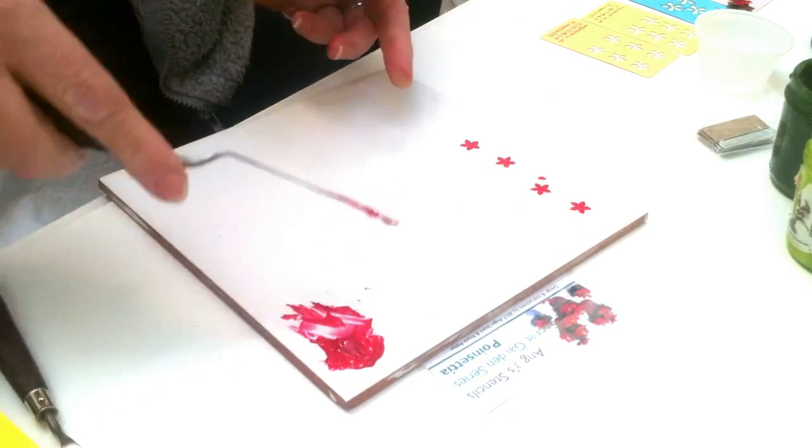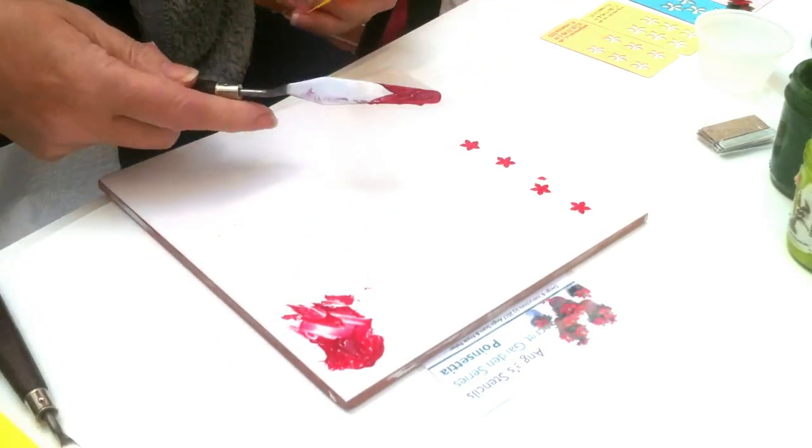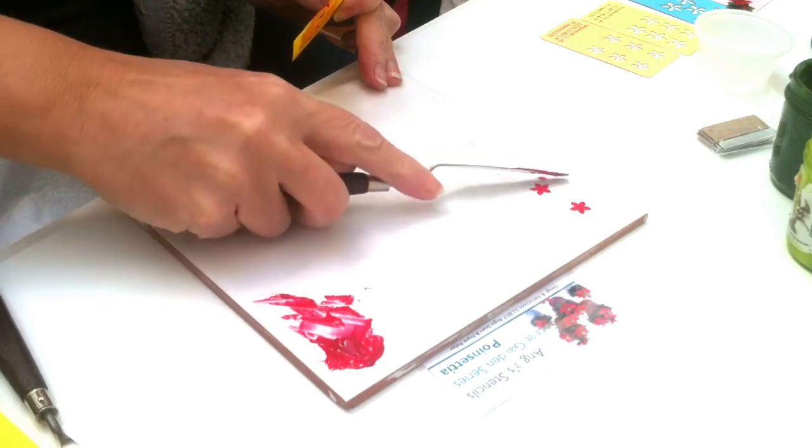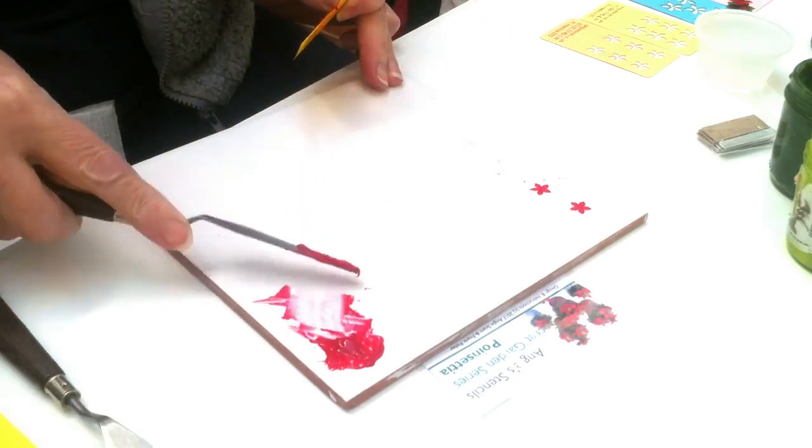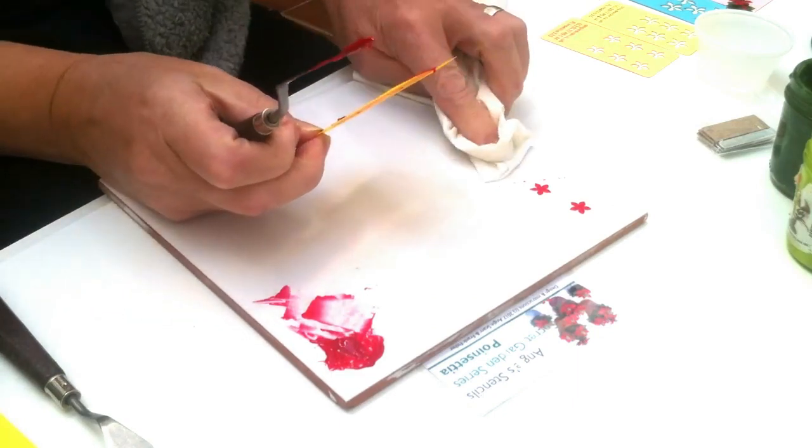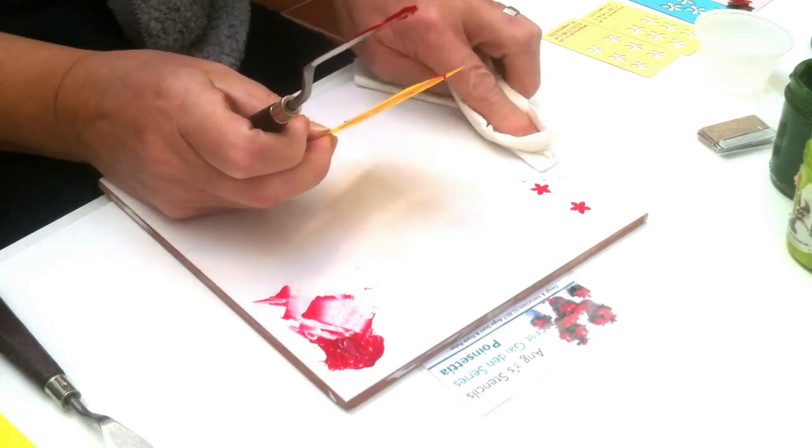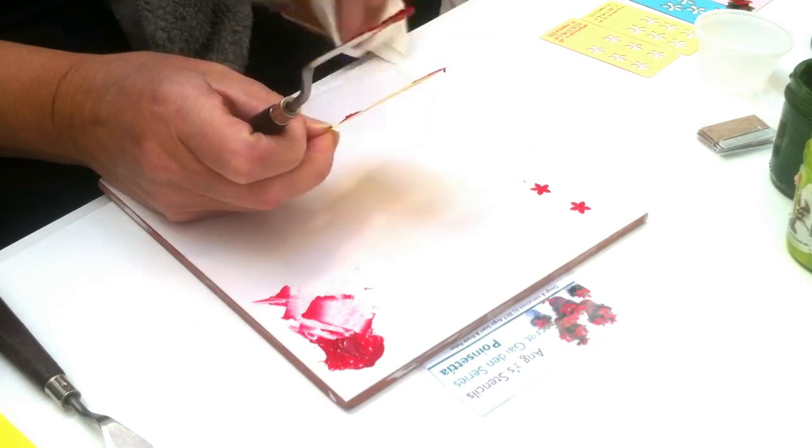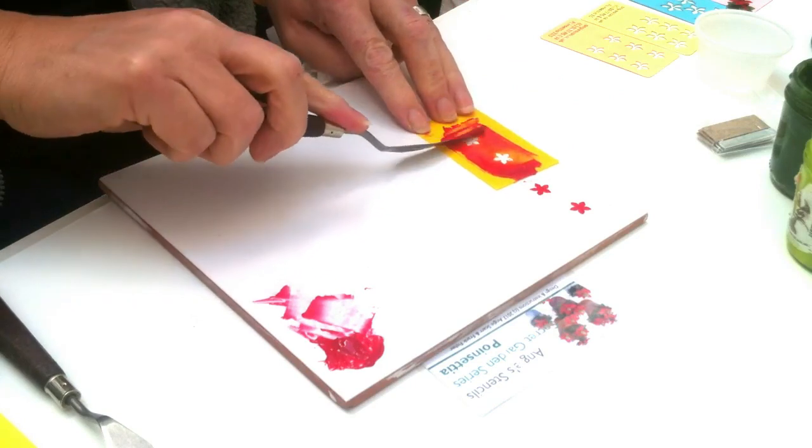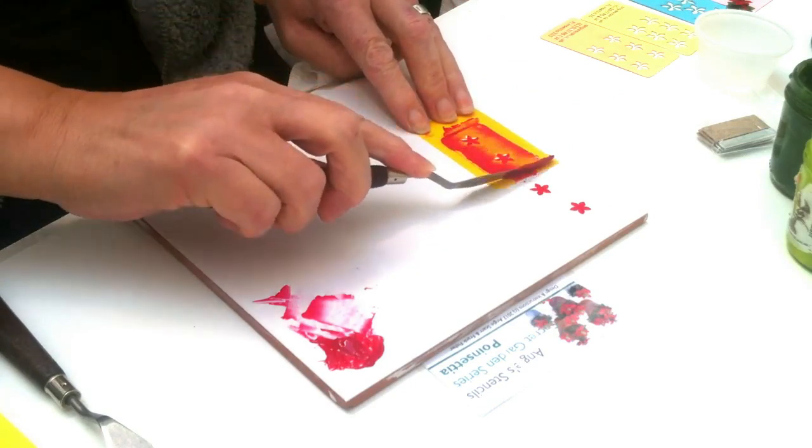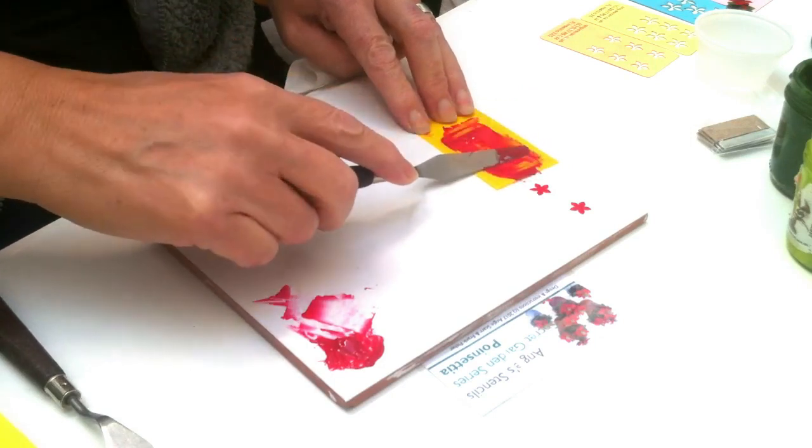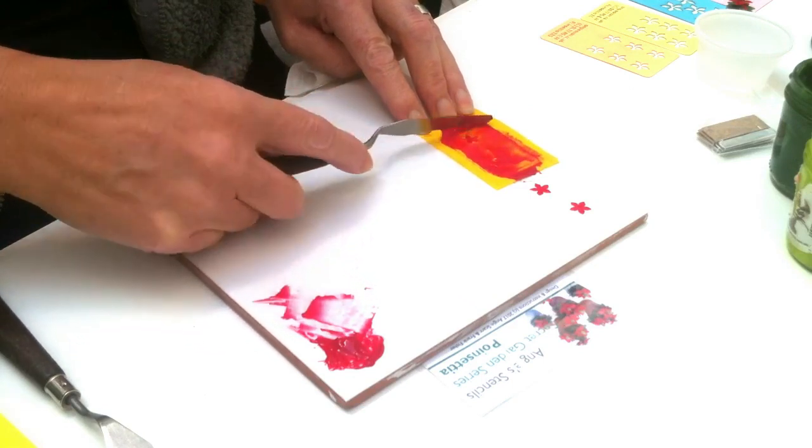I'm happy with those. I'm not perfectly happy with this one, and all you do if you're not happy with it is simply scrape it off again, and then you can just start again. Don't leave your tile too dirty - if it's a bit dirty just clean up because otherwise those bits will bake and they will just put little edges on your flower.